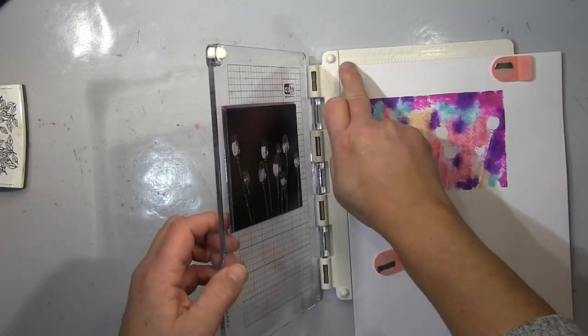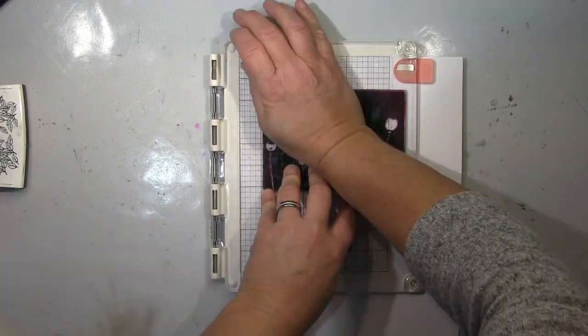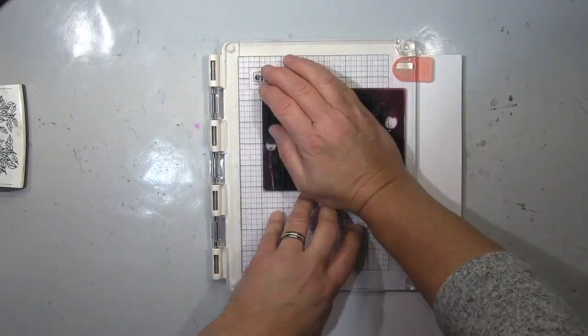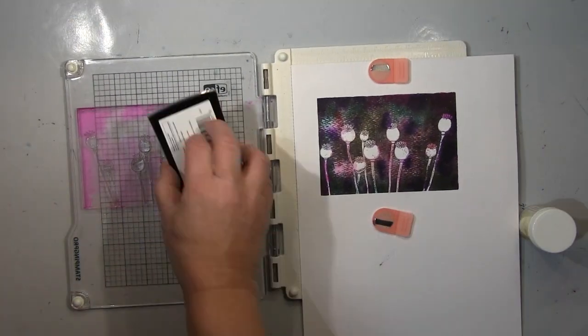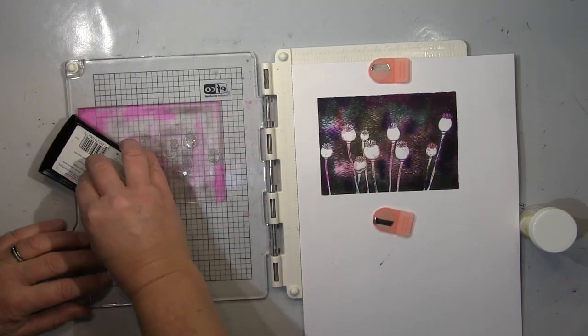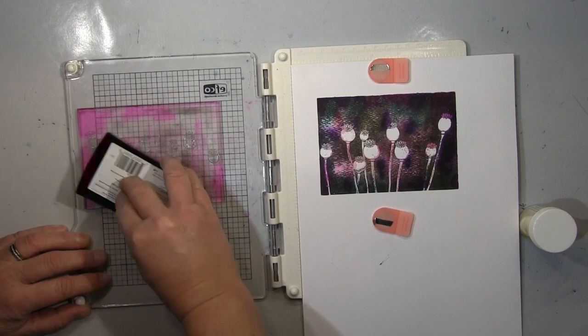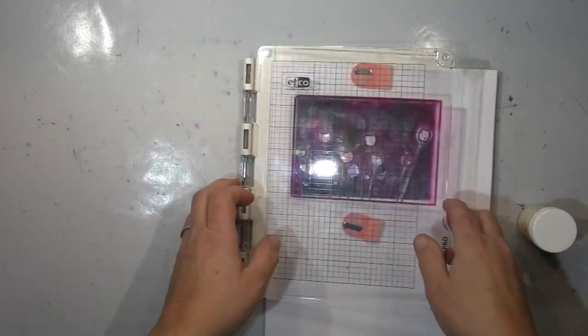Das ist ganz schweres Aquarellpapier, darum bekommt man keinen sehr sauberen Abdruck mit dem Schwarz, wie ihr hier seht. Aber das ist genau das, was ich will. Das ist der Effekt, den ich auch brauche, damit man auch die Farbe noch sieht.